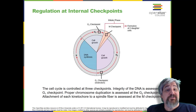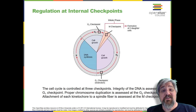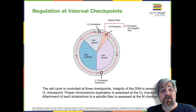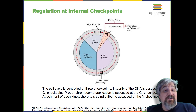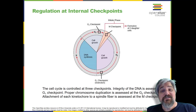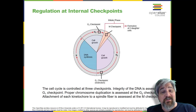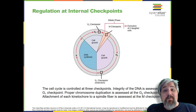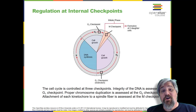The M checkpoint occurs near the end of the metaphase stage of mitosis. The M checkpoint is also known as the spindle checkpoint because it determines if all the sister chromatids are correctly attached to the spindle microtubules. Because the separation of the sister chromatids during anaphase is an irreversible step, the cycle will not proceed until the kinetochores of each pair of sister chromatids are firmly anchored to spindle fibers arising from opposite poles of the cell.